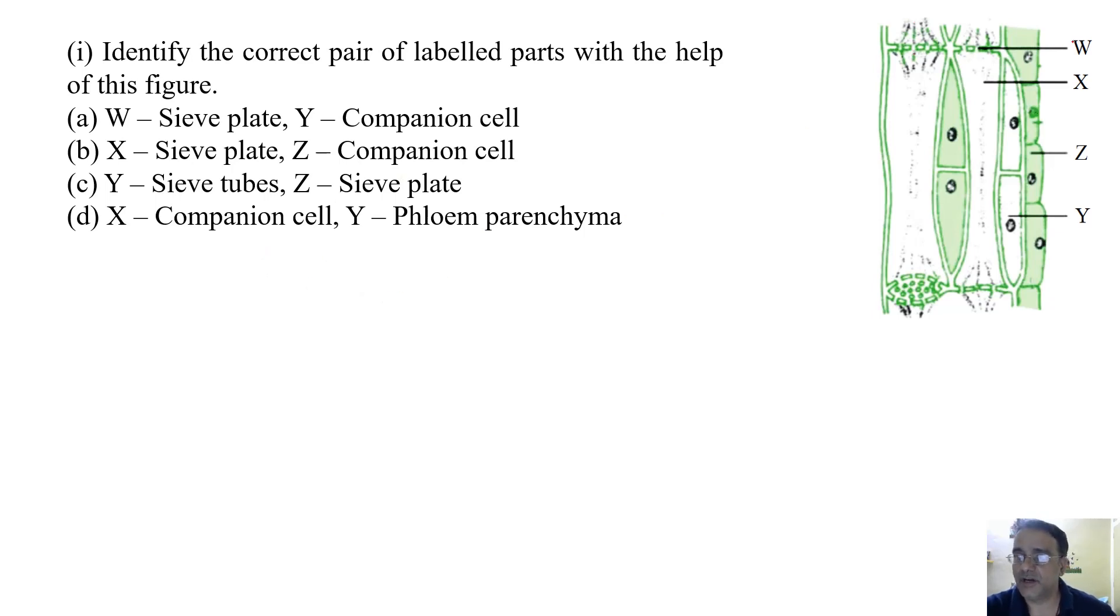Here W, this part, these are plates. These are sieve plates. And X is the sieve tube. And Y, this part is companion cells, and this part is phloem parenchyma.